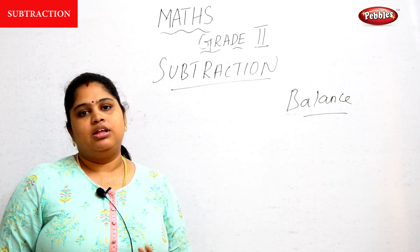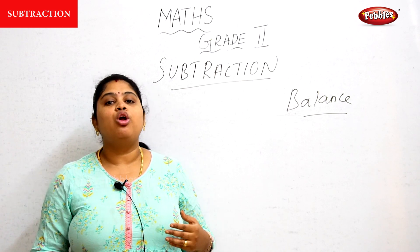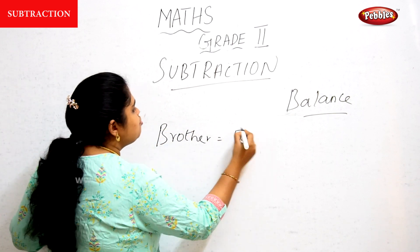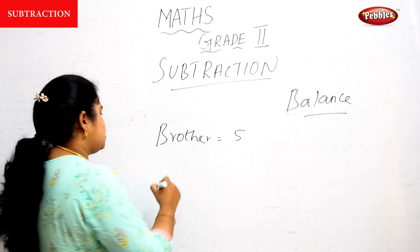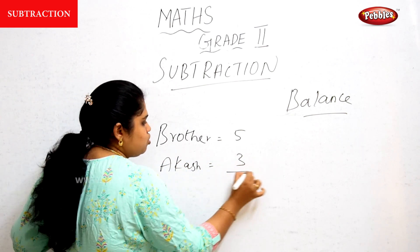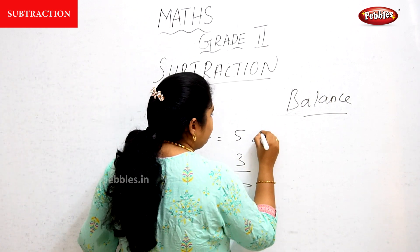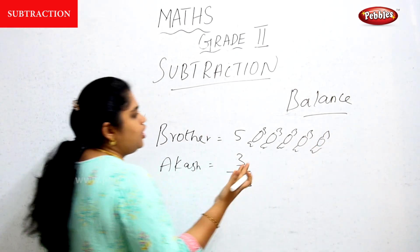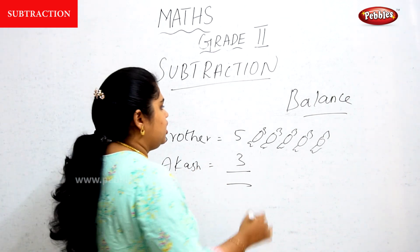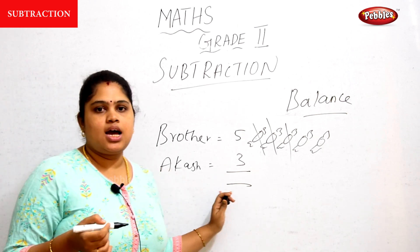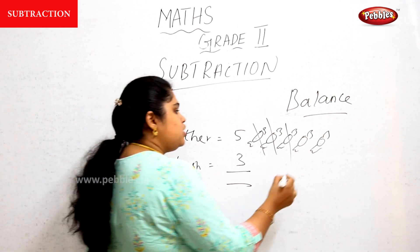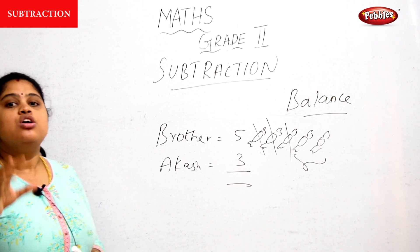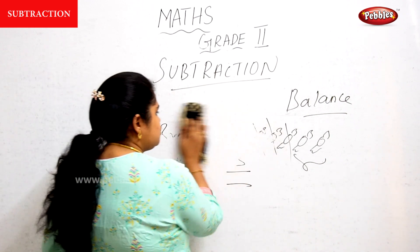For example, your brother has five chocolates. You borrowed three chocolates from your brother — let's say your name is Akash. Akash borrowed three chocolates. So three chocolates were given to Akash, and the remaining two chocolates will be with your brother. So this is what balance or remainder means.